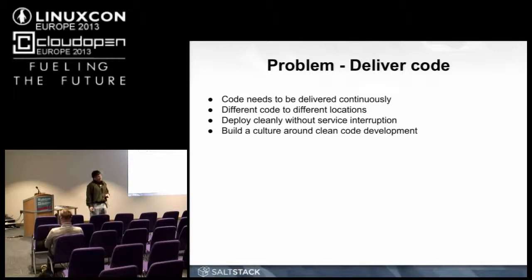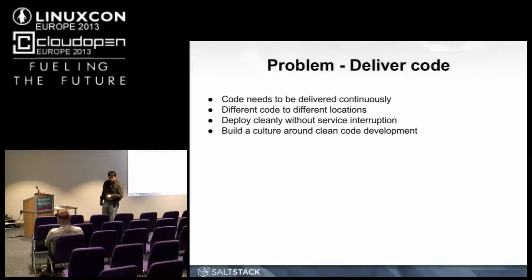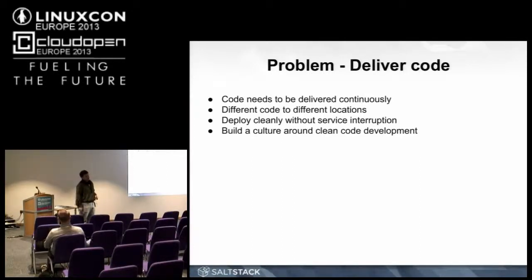Service interruption is very important, because for extremely large websites and very professional deployments, they like to go through great lengths to make sure that you never hit the website during one of these code deployments because they can be very frequent. You can have many code deployments in a day. You don't want users to hit that website in the middle of a deployment and something wrong to happen because files were in an intermittent state.